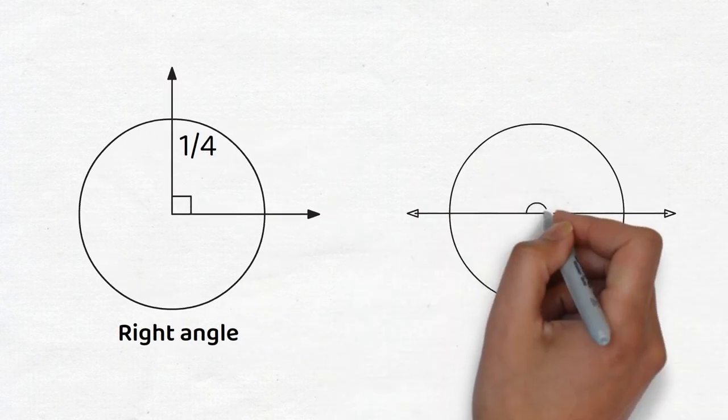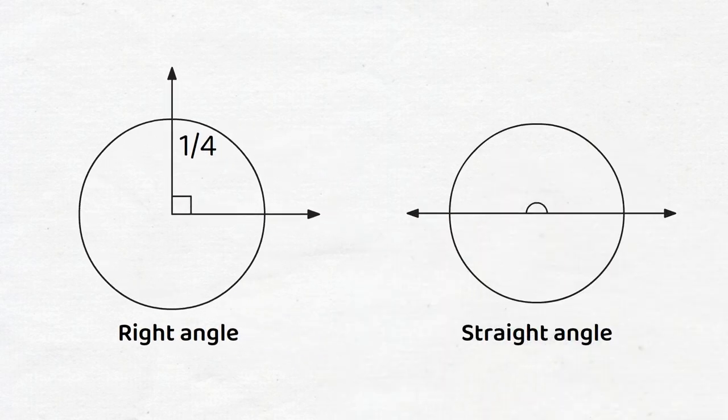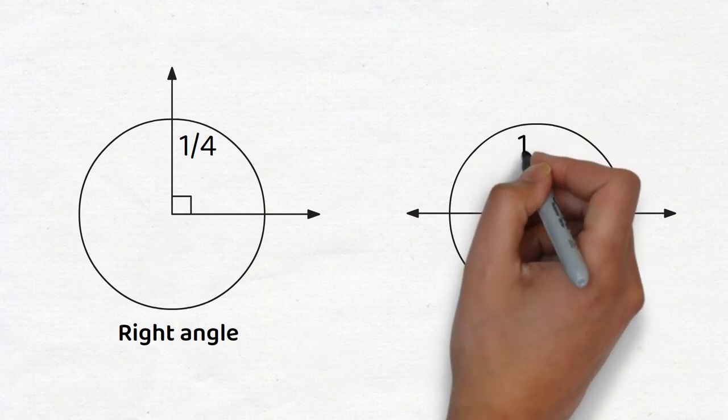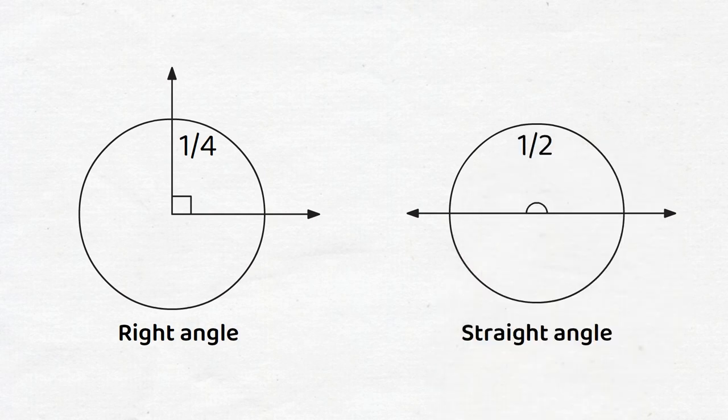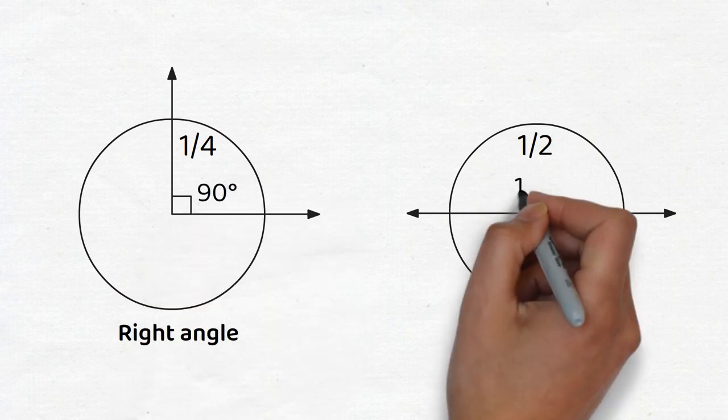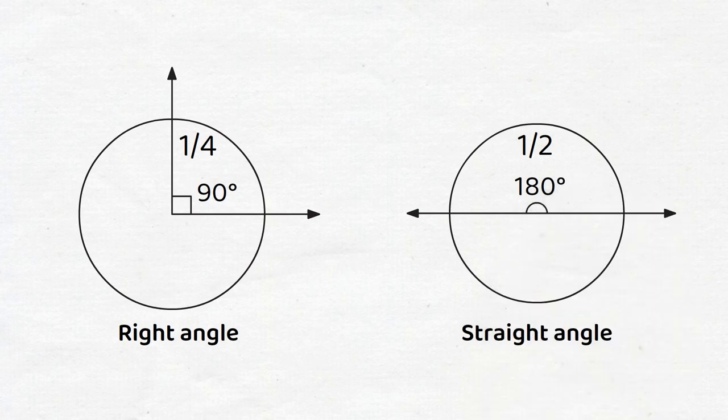The second one is called the straight angle. This is an angle formed by two rays which form a slice that is half of the whole circle. Therefore, a right angle has a measurement of 90 degrees, and a straight angle has a measurement of 180 degrees.